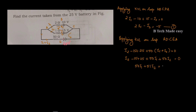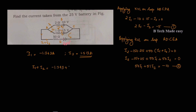Solving the two equations: I1 equals minus 1.743 Amperes and I2 equals 1.513 Amperes. We calculate the current through the 25V battery, which equals 5I2, giving us minus 1.743 plus 1.513 Amperes.